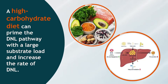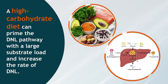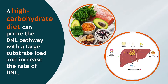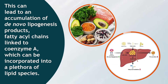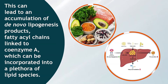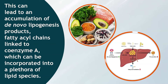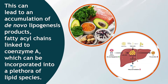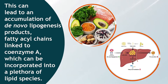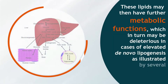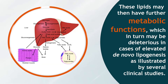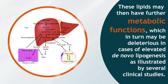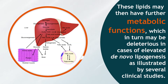In liver disease, a high-carbohydrate diet can prime the De Novo Lipogenesis pathway with a large substrate load and increase the rate of De Novo Lipogenesis. This can lead to an accumulation of DNL products — fatty acyl chains linked to coenzyme A — which can be incorporated into a plethora of lipid species. These lipids may then have further metabolic functions, which may be deleterious in cases of elevated DNL, as illustrated by several clinical studies.